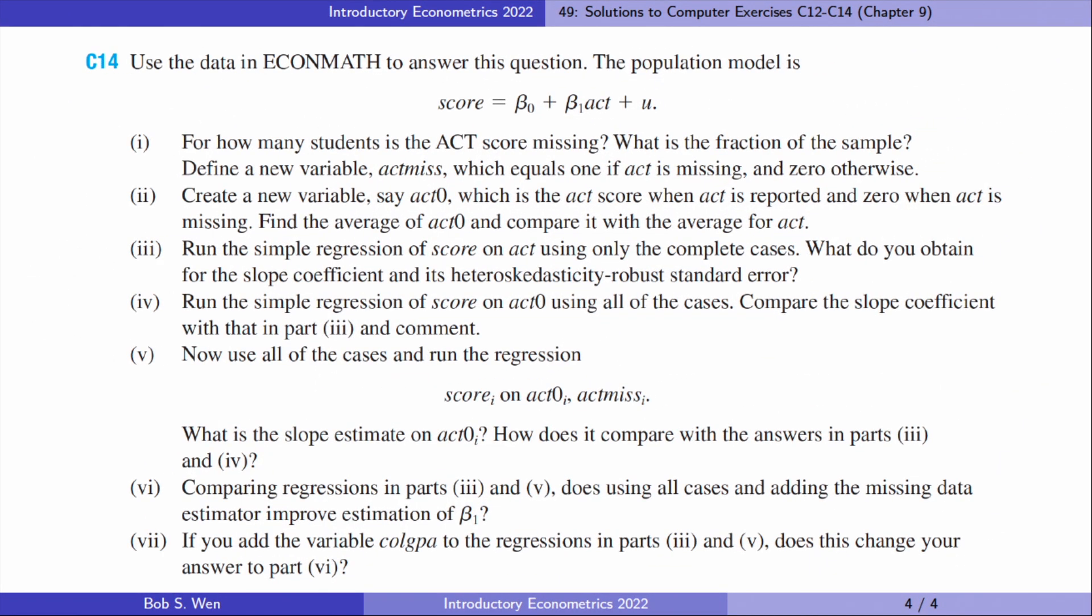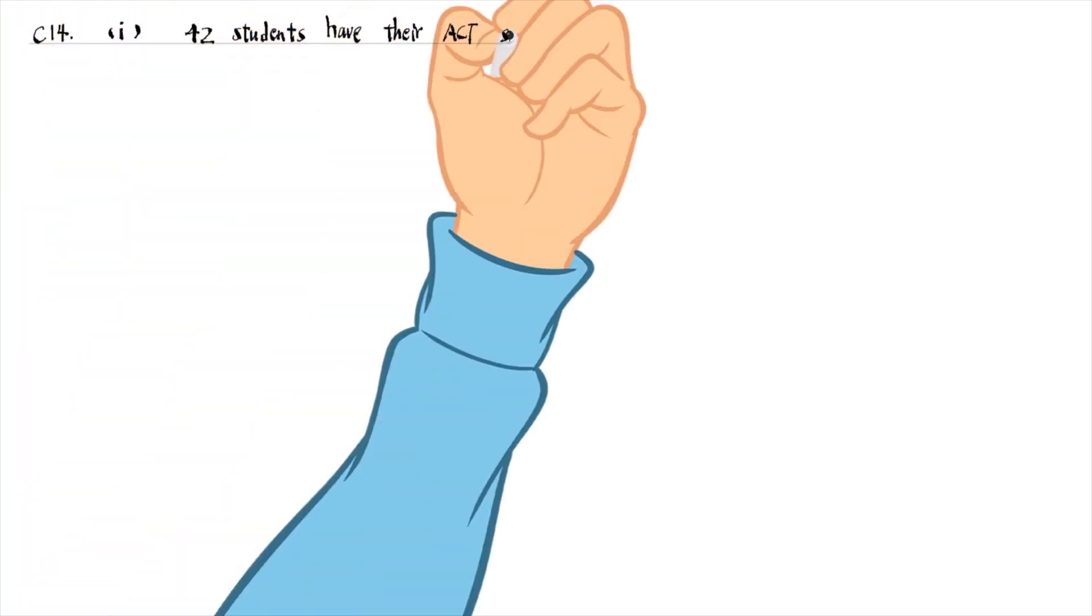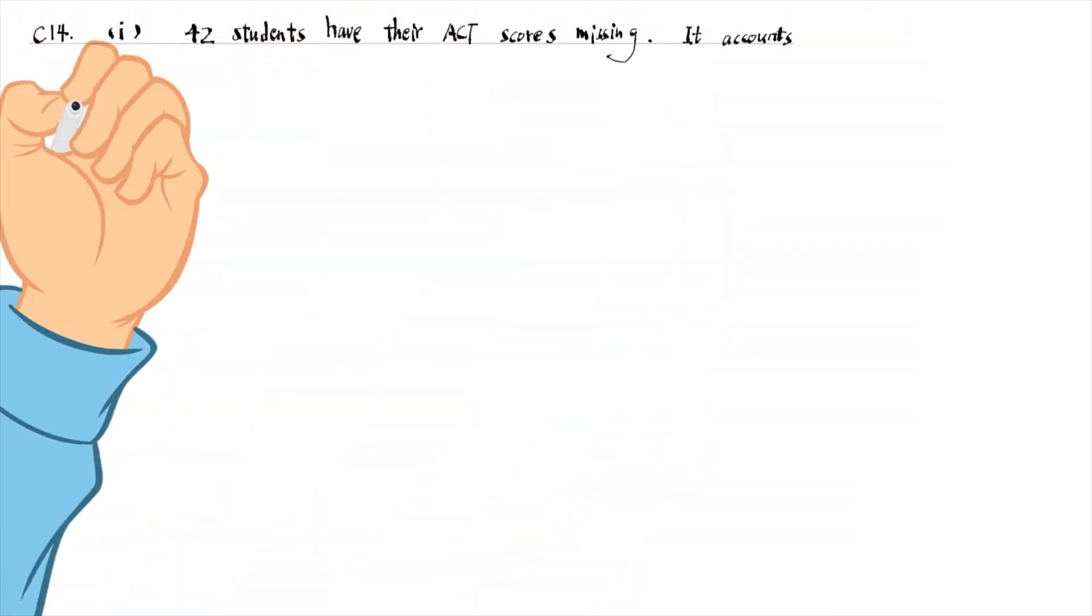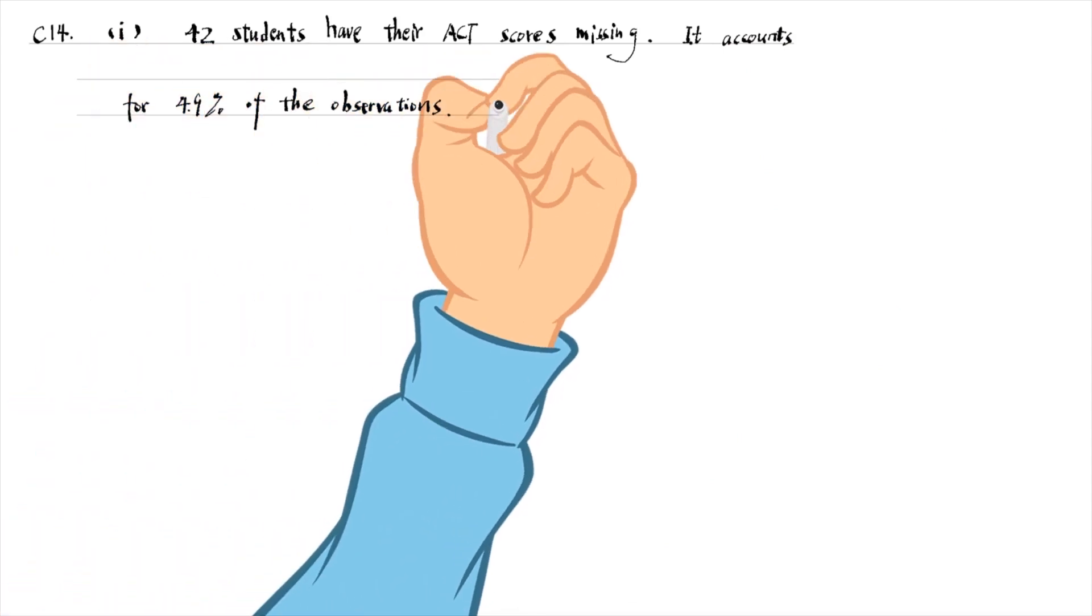Let's find answers to computer exercise 14. For part 1, 42 students have their ACT scores missing. It accounts for 4.9% of the observations.